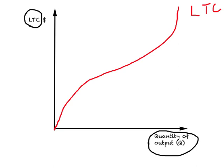As you increase output it costs more to produce — long-run total cost increases. To produce more output we need more workers and more machines, and given wages and rent, as we employ more workers and more capital we have to pay out more money as total cost. All points on the LTC curve represent the most efficient point — the lowest possible total cost of producing each unit of output.